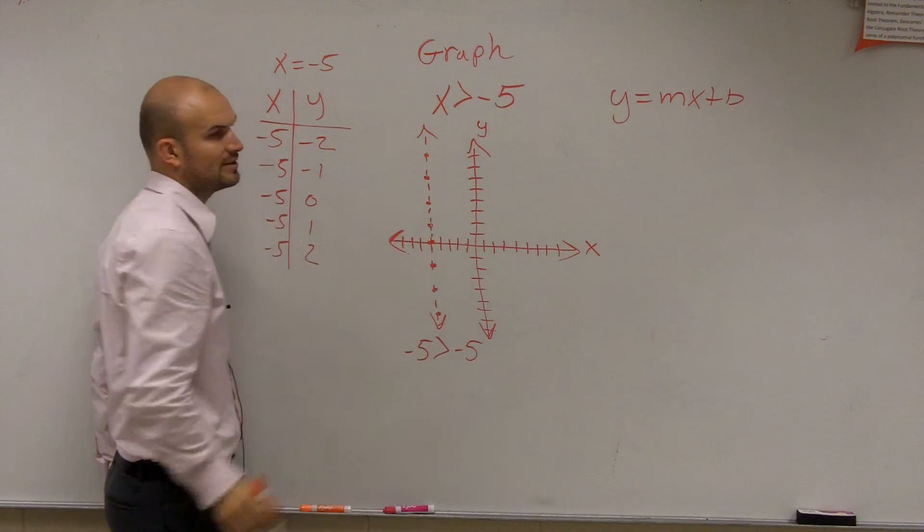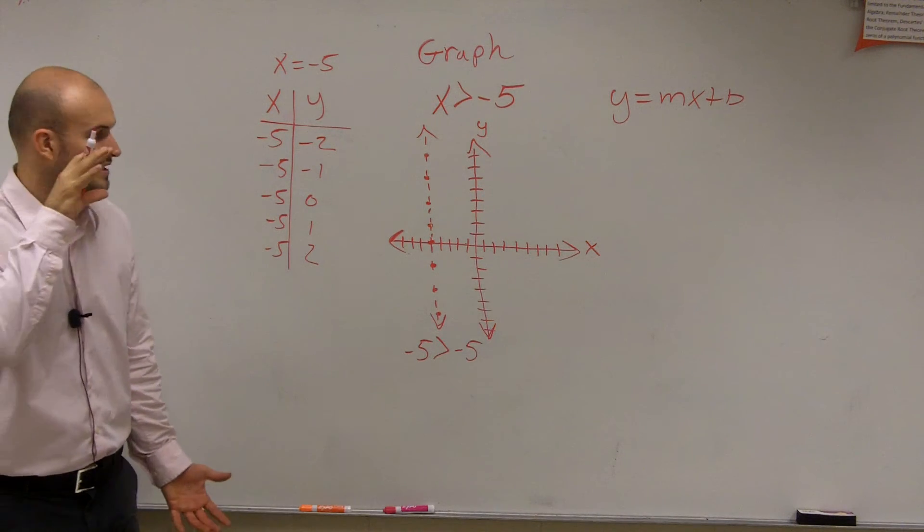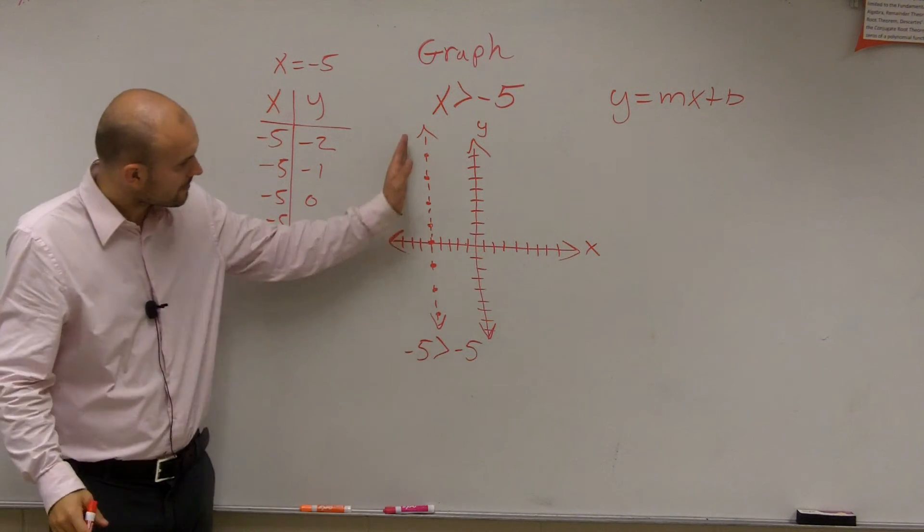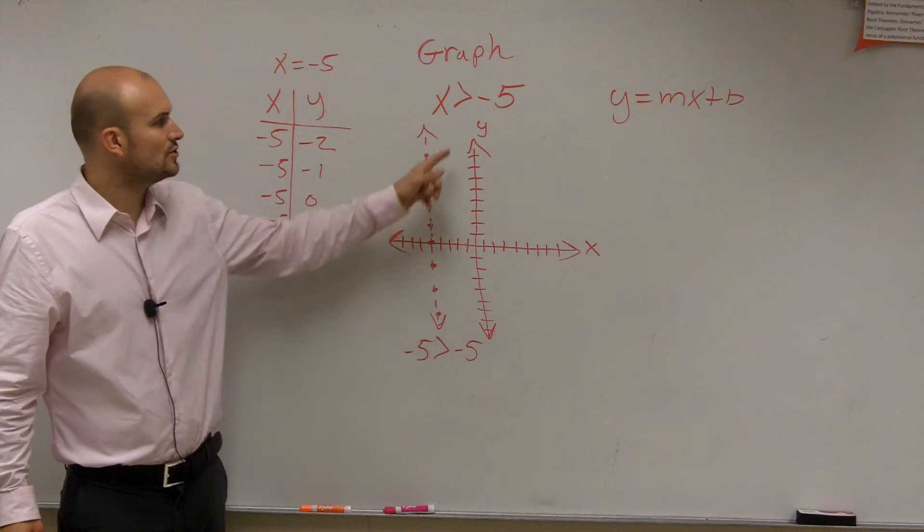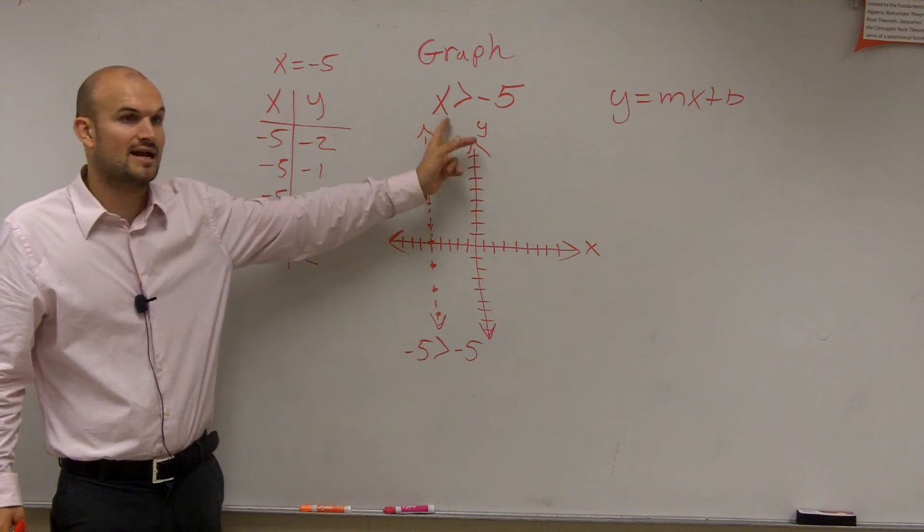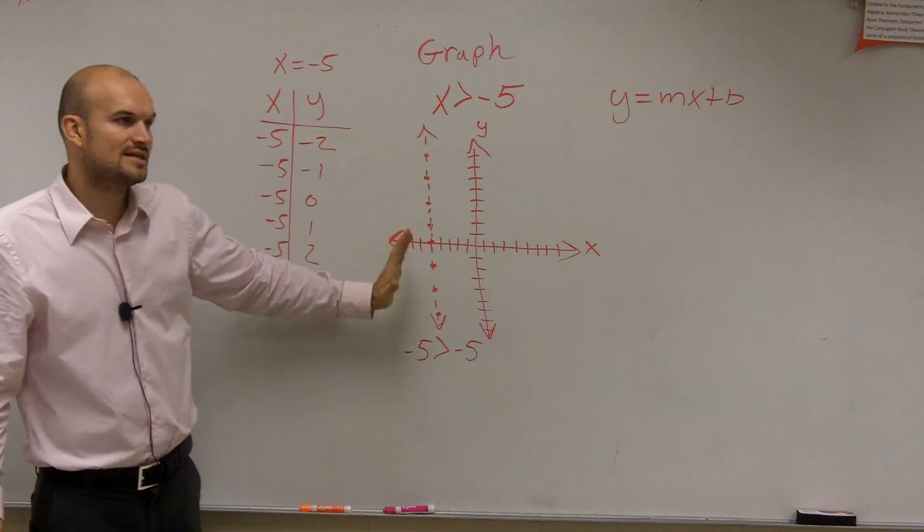So you're going to have a dashed line. Make sure you put arrows. Some of you are being lazy and not putting arrows. A line is infinite in distance. You could also notice that it's dashed just because it's greater than or not greater than or equal to. That's kind of the easier way to look at it.